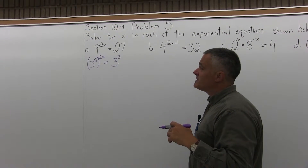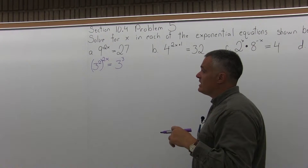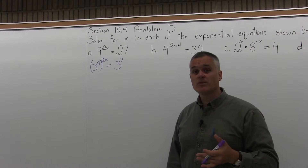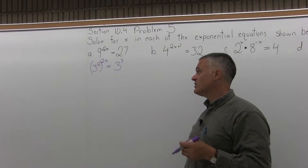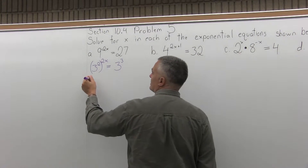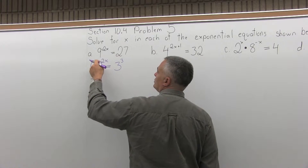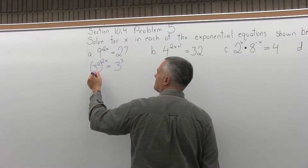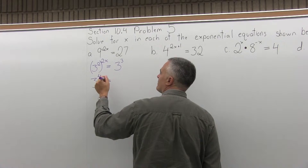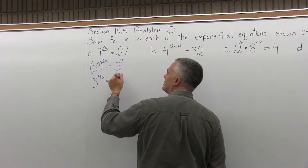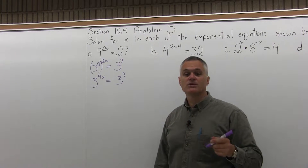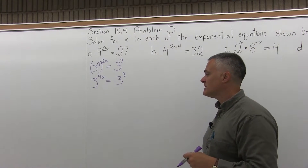Now on the left side, 3 to the second to the 2x is a power to a power. The rules for exponents say when you have a power to a power, you multiply the exponents. So this becomes 3 to the 2 times 2x power. 2 times 2x is 4x, so I have 3 to the 4x equals 3 to the third. Now I have the same base on both sides.